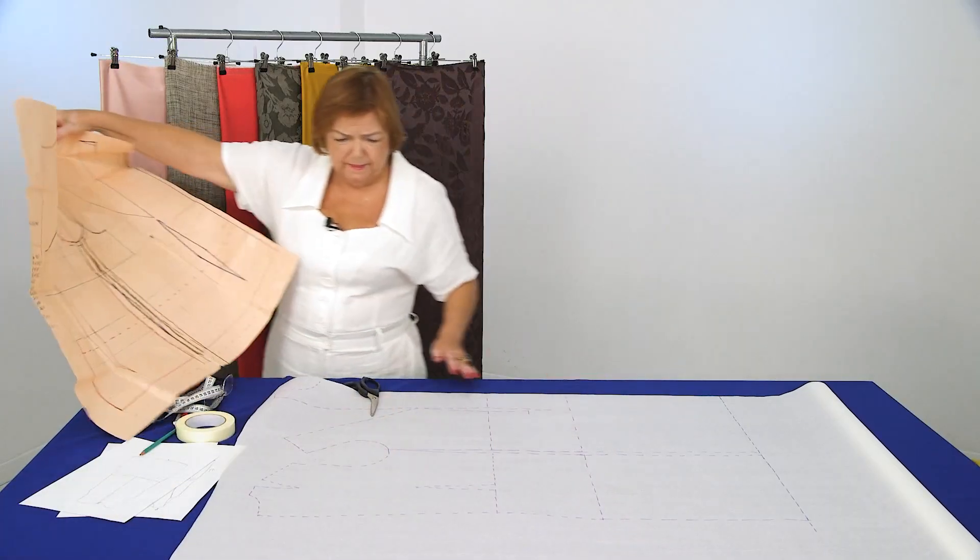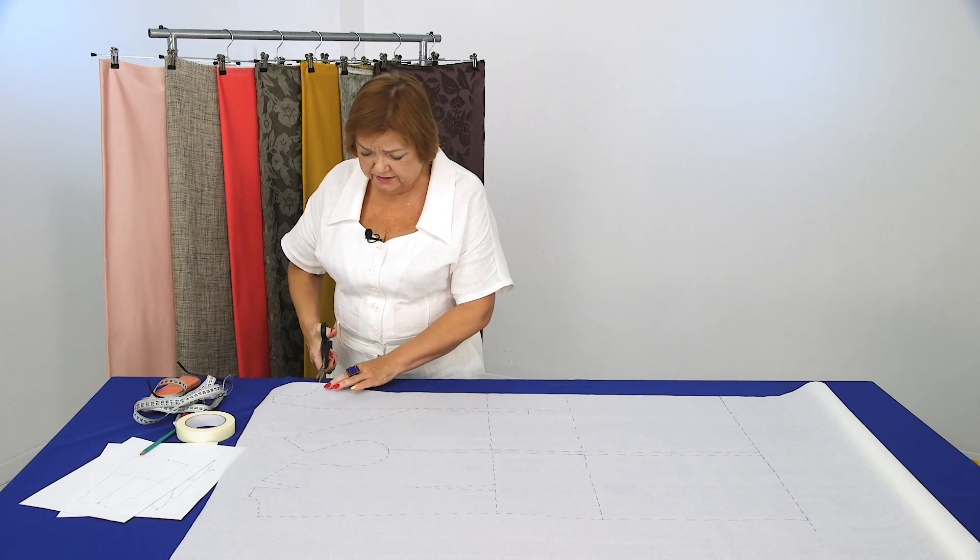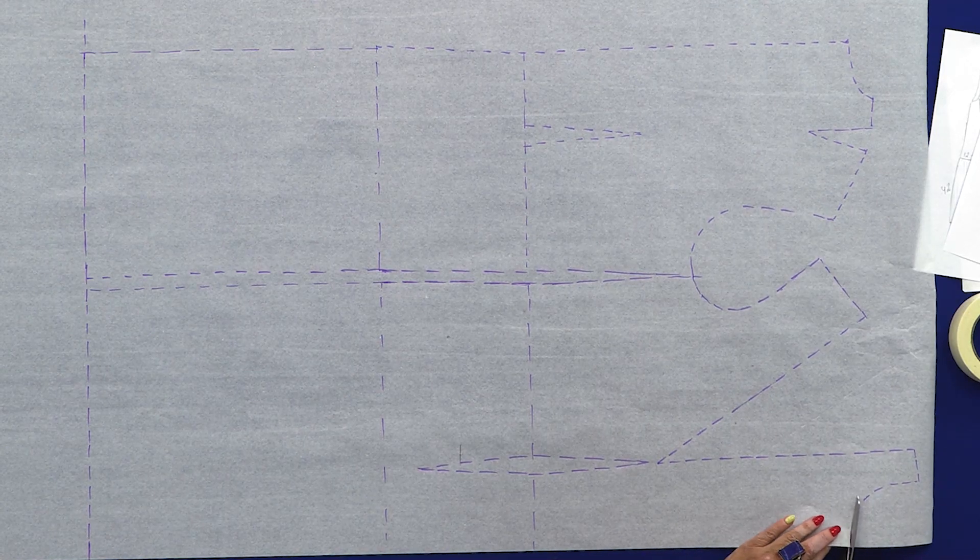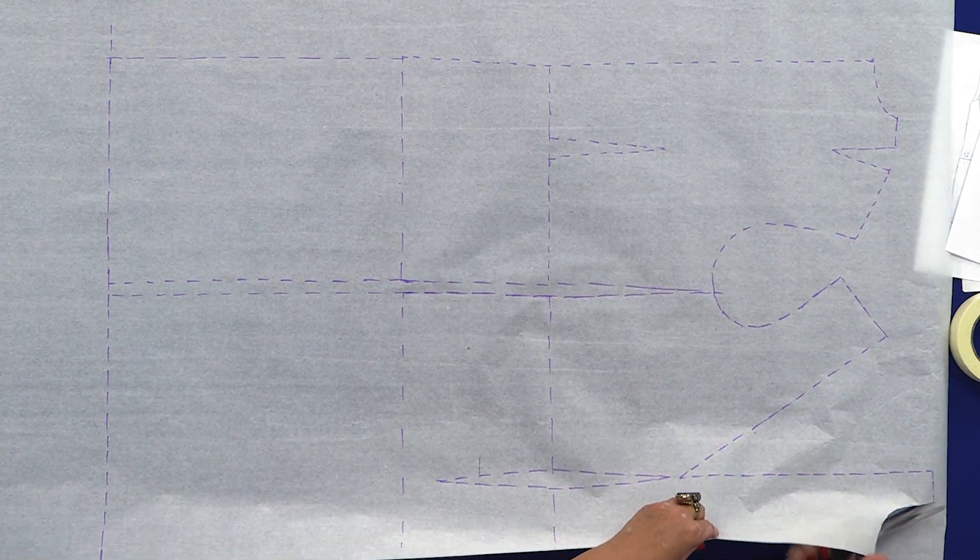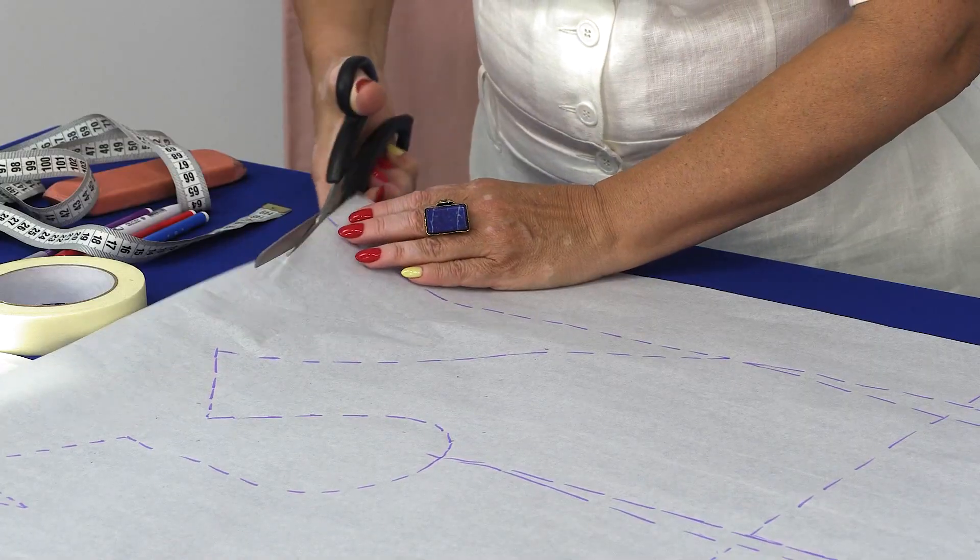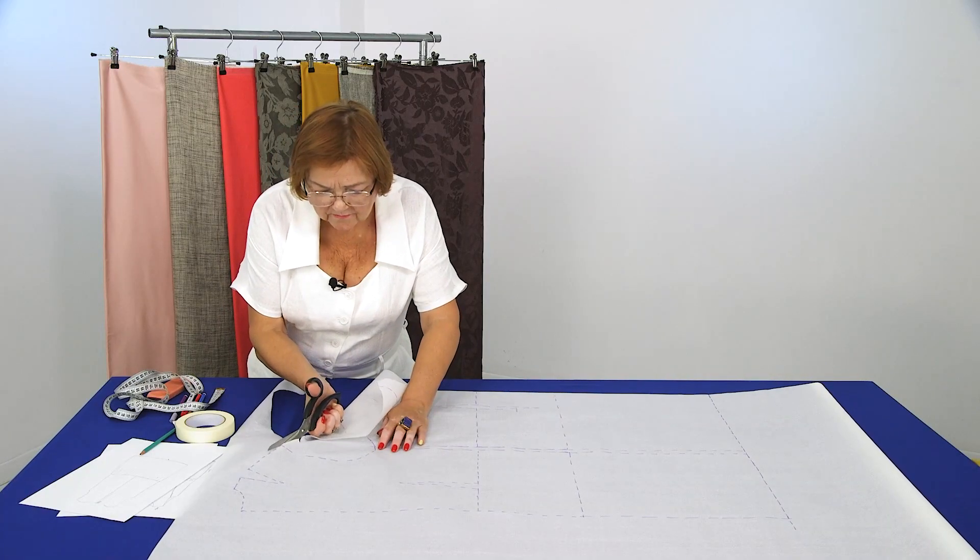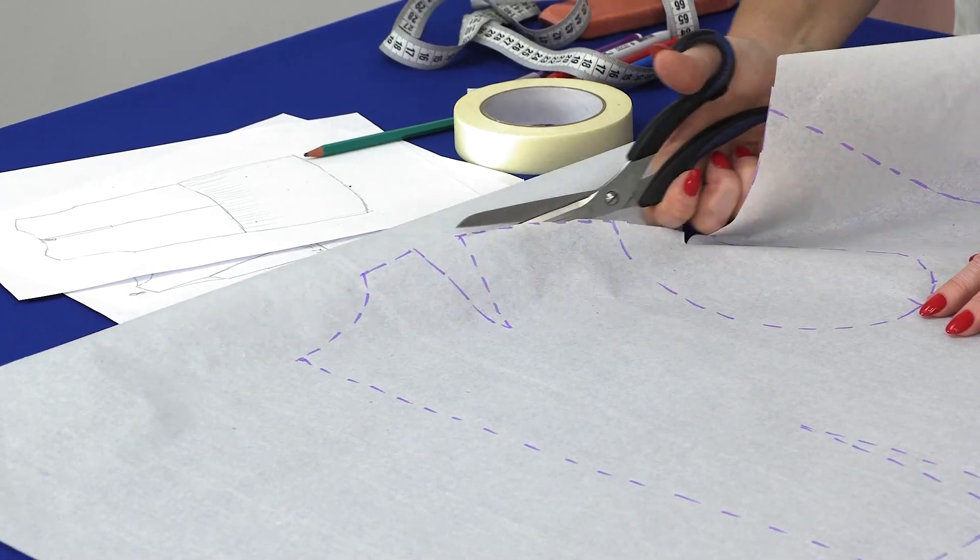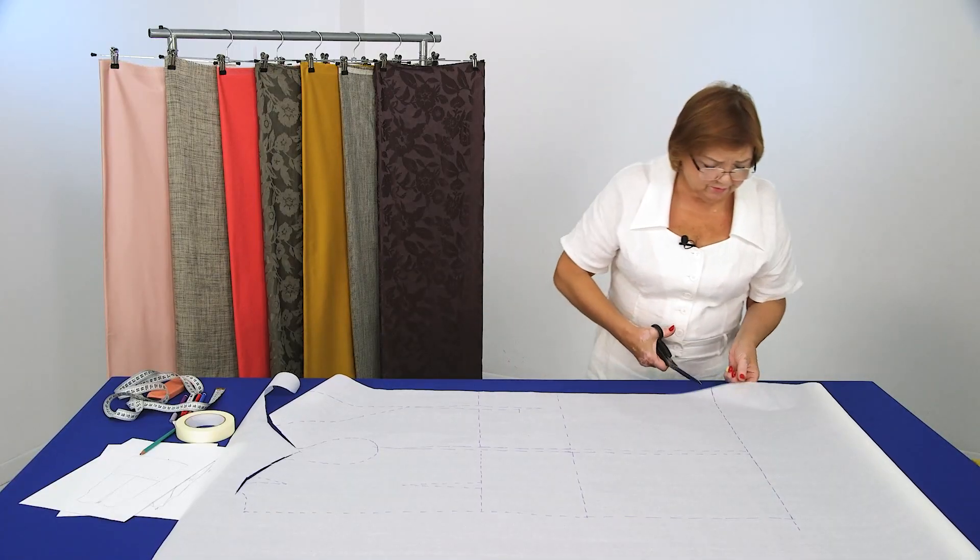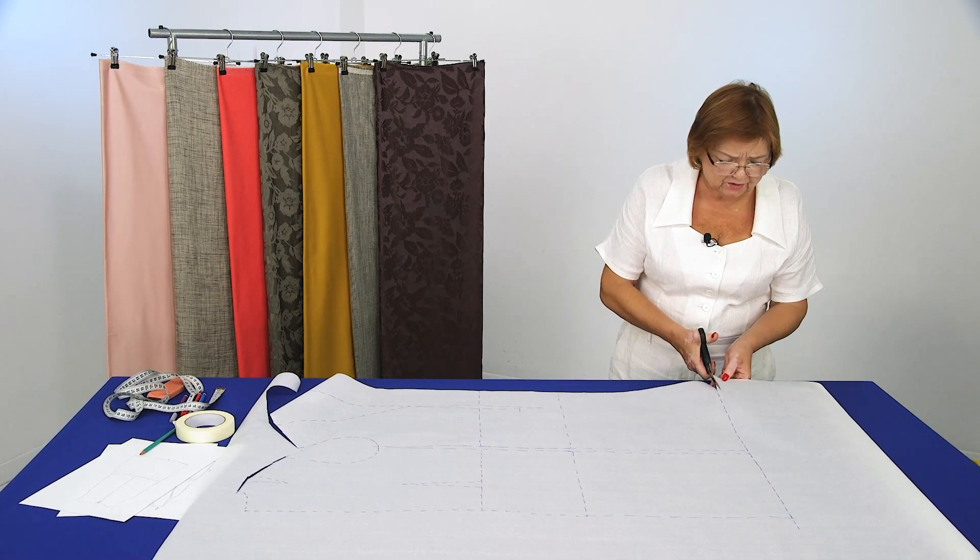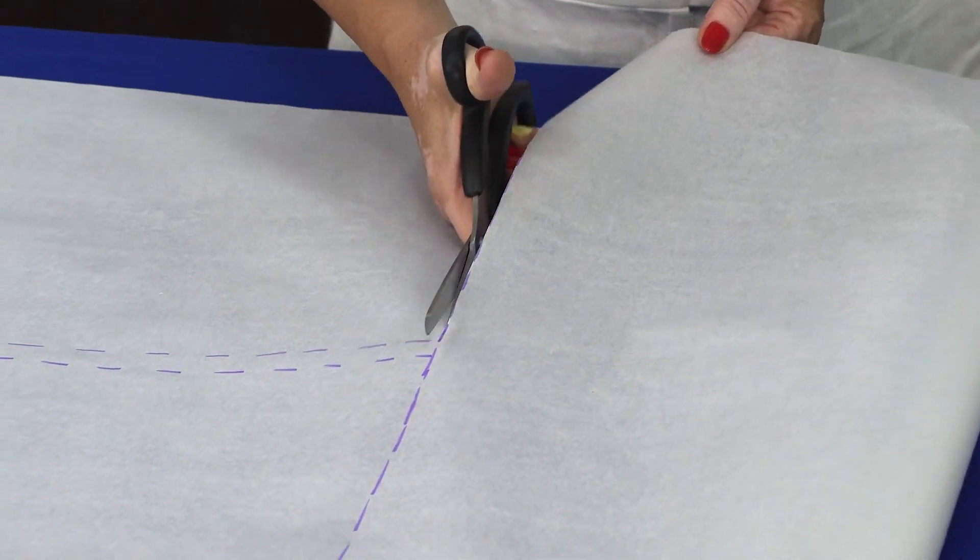First of all, I'm cutting out the front and the back parts. Next, I will place them on the tracing paper and start drafting. Let's try to remove the bust dart. This mustard-colored, loose-fitted dress does not have a dart. That is why we will have one more lesson about removing darts.